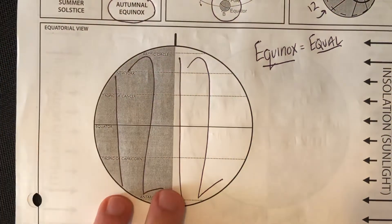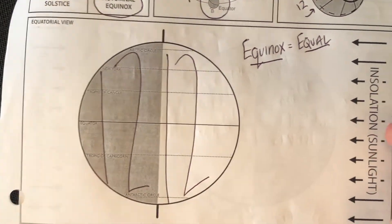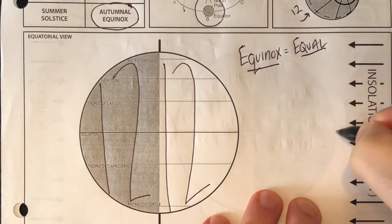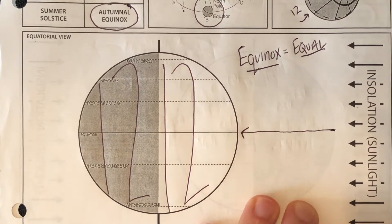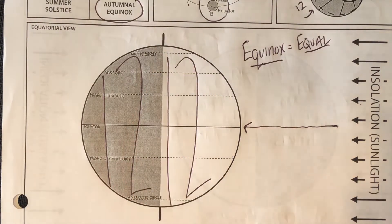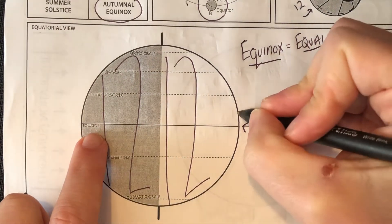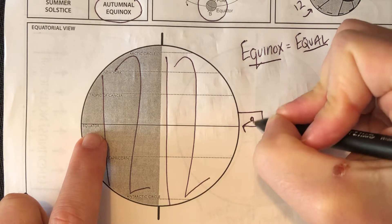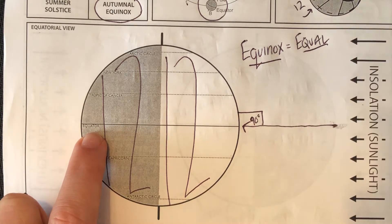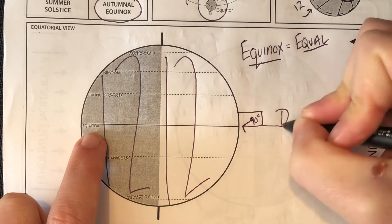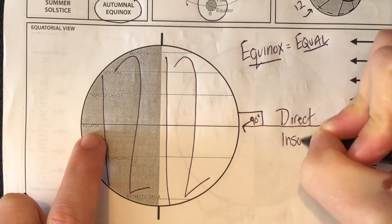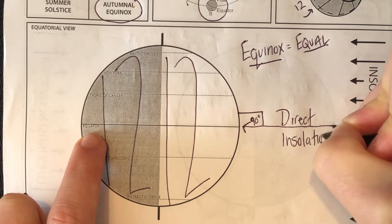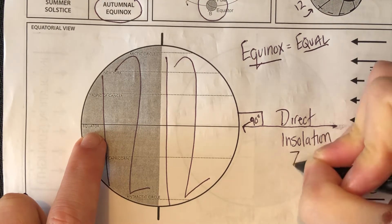Now what's nice about this is that when you look at the latitude that gets the most direct sun, it is really clear. That's going to be the equator. Just from the position of the tilt of the axis and so on, the equator, that's where the sun is going to be at the zenith. It's going to be 90 degrees above the observer. This is the direct insolation, which means that the sun is at the zenith.